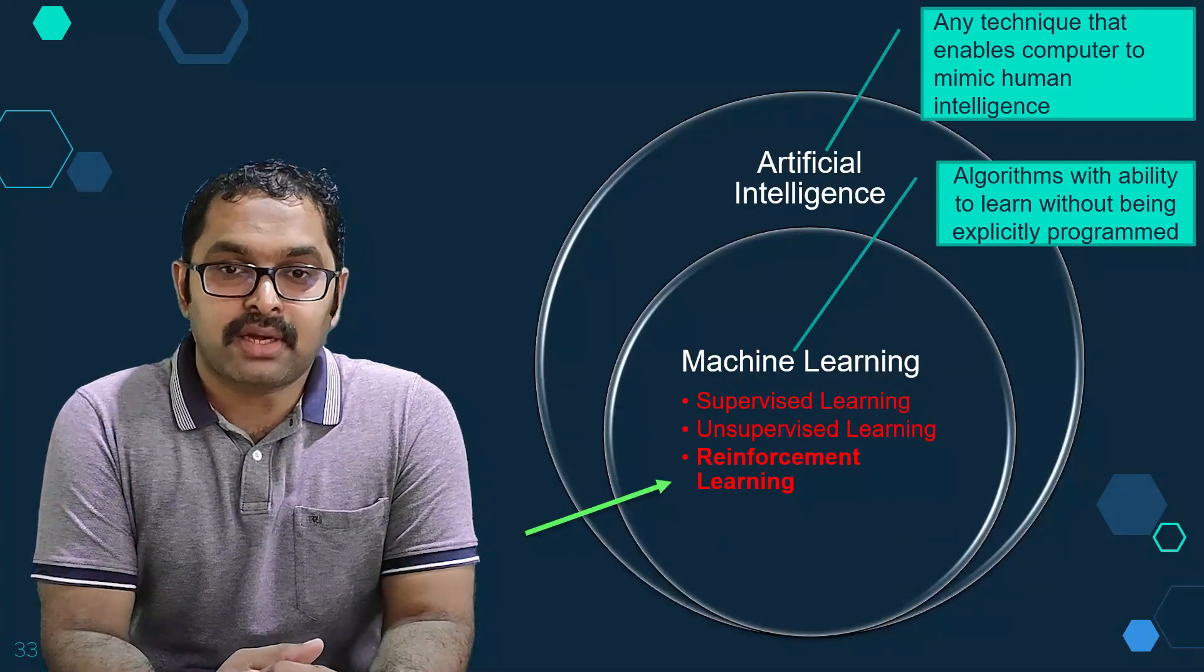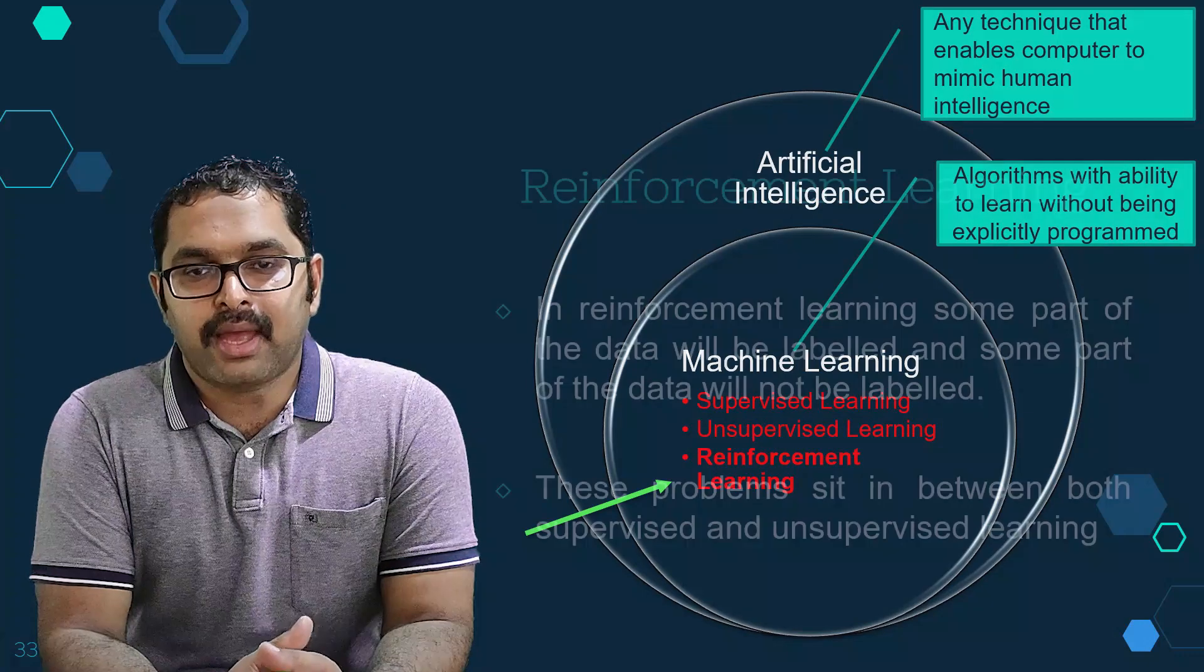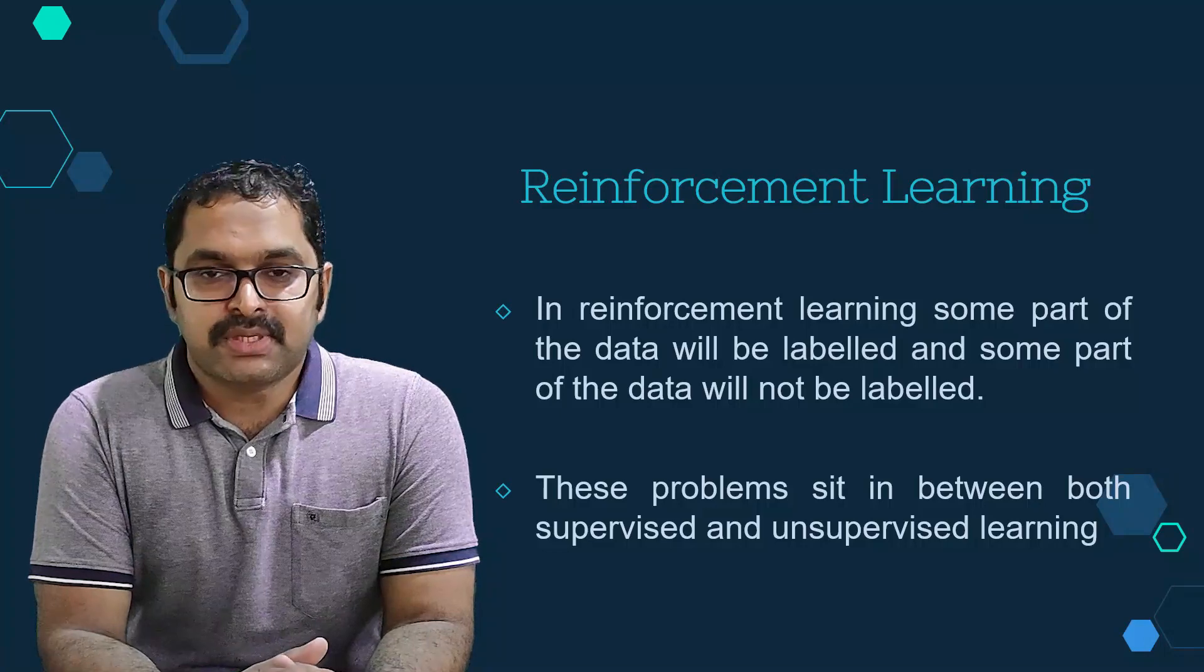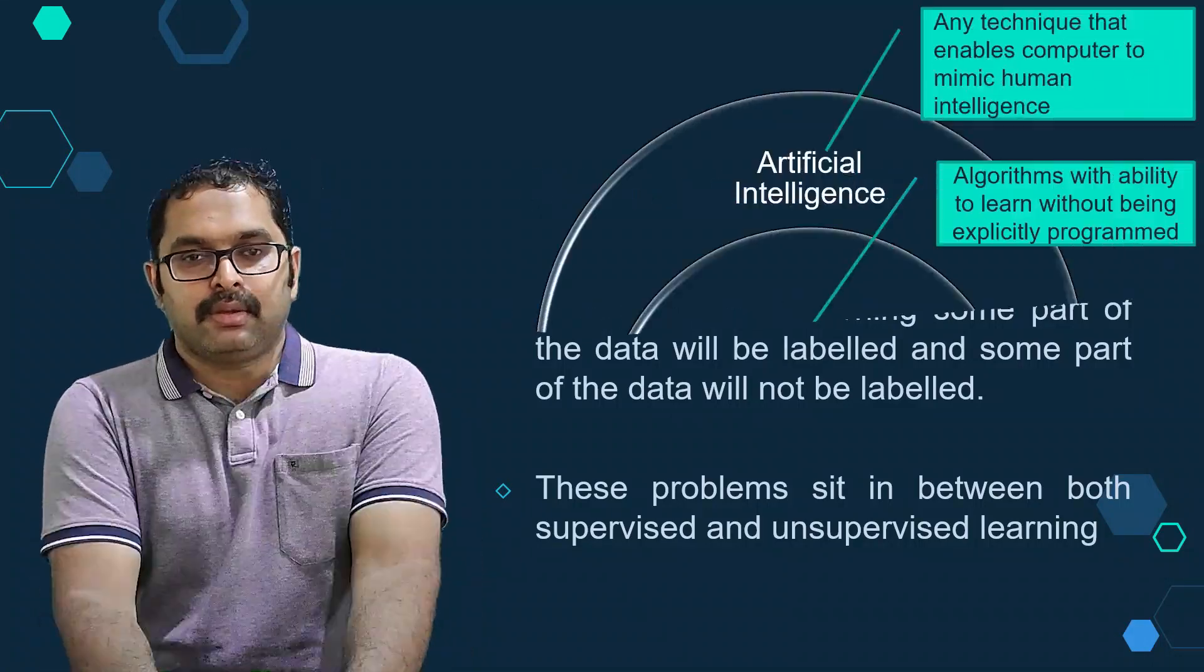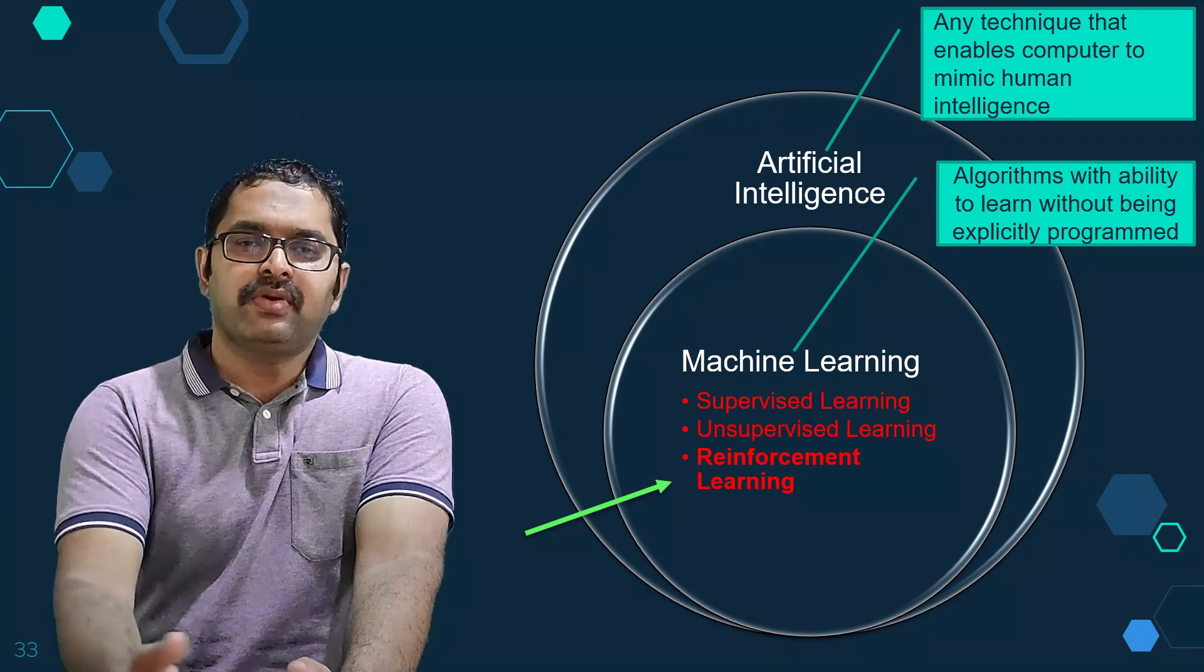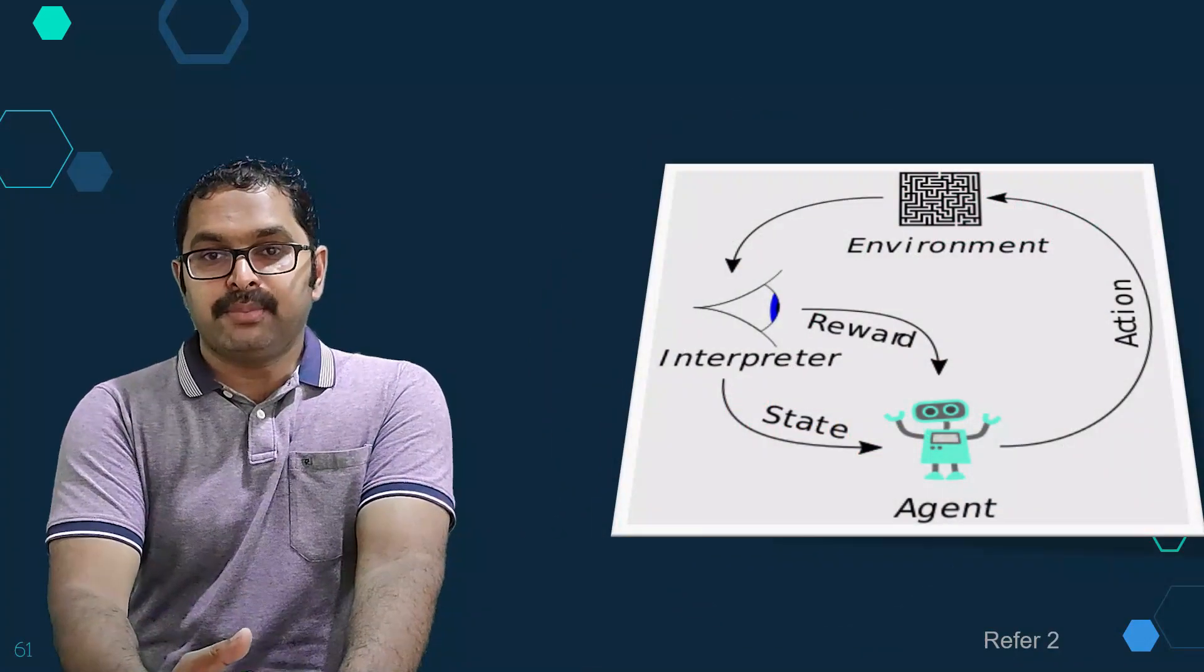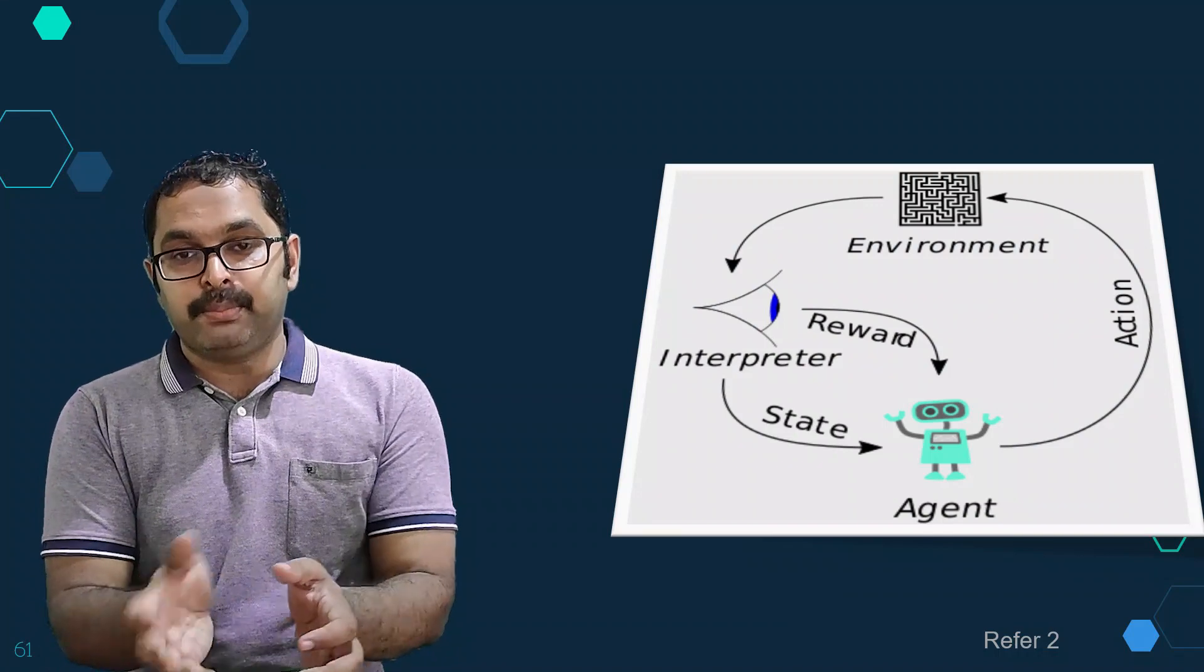Now let's see what is reinforcement learning. In reinforcement learning, some part of the data will be labeled and some other part of the data will not be labeled. These problems sit in between supervised category and unsupervised learning category. Many real-world machine learning problems fall into this area. Reinforcement learning is all about taking decisions sequentially. In simple words, we can say that the output depends on the state of current input and the next input depends on the output of the previous input.